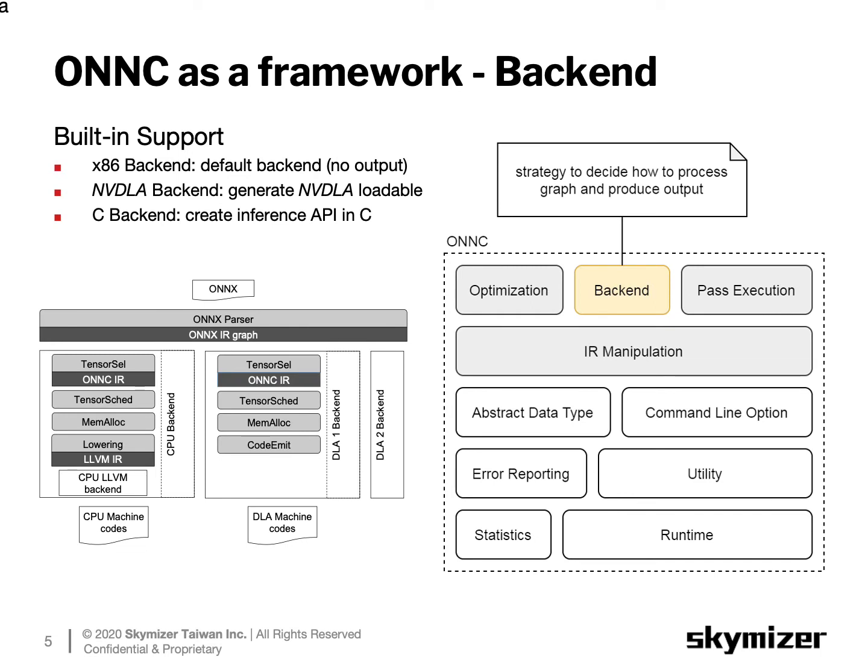Next, the backend is a major module for users to customize an ONNC-based compiler for a specific hardware. The ONNC framework provides an ONNC model parser and graph-level optimizations, just as a typical compiler frontend would do. In ONNC, all frontend functionalities are usually embedded in an ONNC backend implementation. The default backend implementation covers a couple of required passes, including tensor selection, tensor scheduling, memory allocation, and code emit.